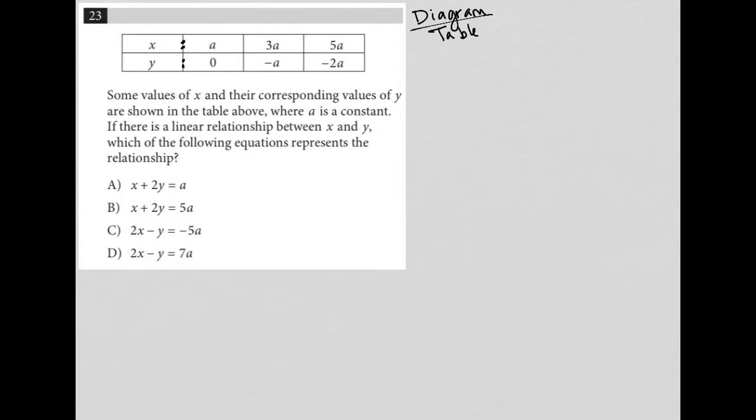If there is a linear relationship, okay, so linear relationship always means Y equals MX plus B. If there is a linear relationship between X and Y, which of the following equations represents the relationship? Okay, so I need to figure out what M is. I need to figure out what B is. Well, M is my slope.